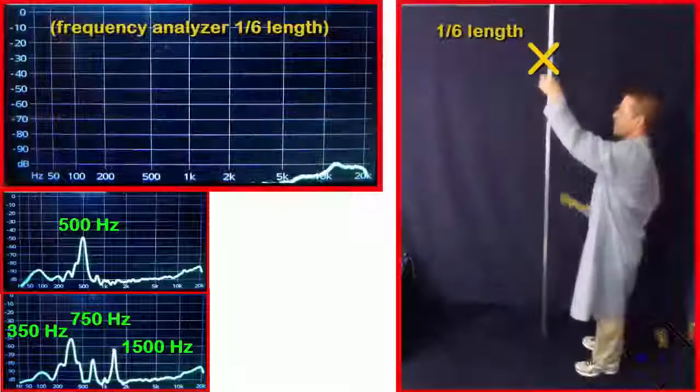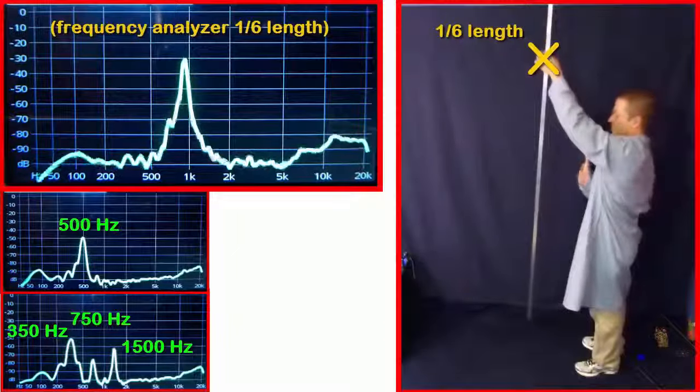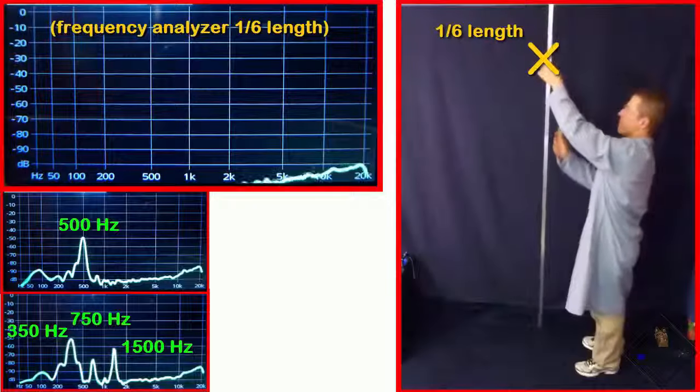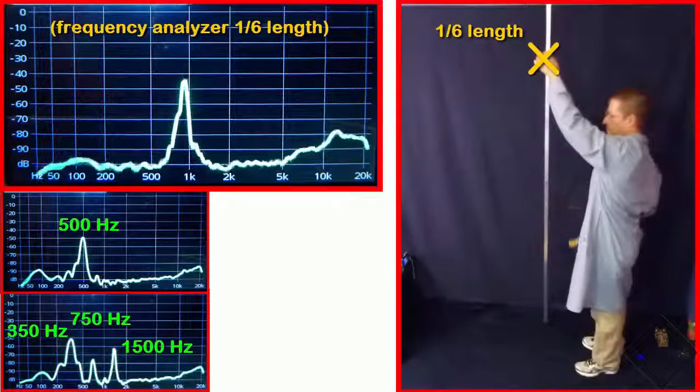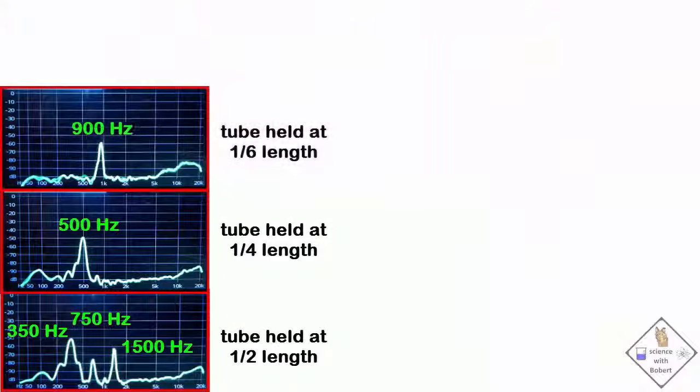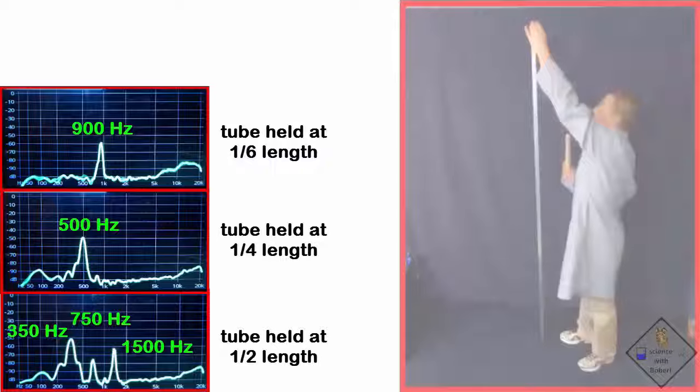When the tube is held at one-sixth the length of the tube, again only one resonant frequency survives, but this time at about 900 Hz. It seems like different resonant frequencies exist depending on where the tube is held. What if the tube was not being touched when struck by the mallet? What would happen then? That's a really good question.